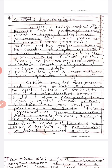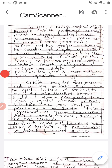In 1928, a British medical officer Frederick Griffith performed an experiment on the bacterium Streptococcus pneumoniae, which causes pneumonia in humans and other mammals. Griffith used two strands — two genetic varieties of Streptococcus — to find a cure for pneumonia, which was a common cause of death at that time.